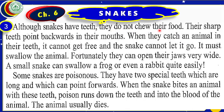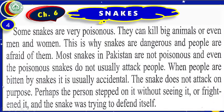Although snakes have teeth, they do not chew their food like us. Their sharp teeth point backwards in their mouth. When they catch an animal in their teeth, it cannot get free and the snake cannot let it go — it must swallow the animal. Fortunately, they can open their jaws very wide. A small snake can swallow a frog or even a rabbit quite easily. Some snakes are poisonous; they have two special teeth which are long and can point forwards. When the snake bites an animal with these teeth, poison runs down the teeth and into the blood of the animal. The animal usually dies.